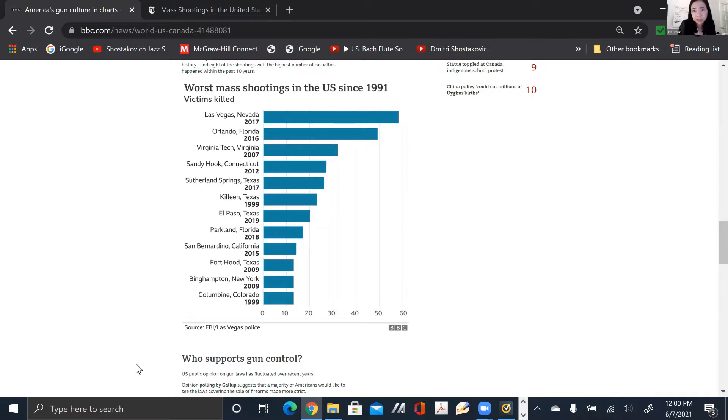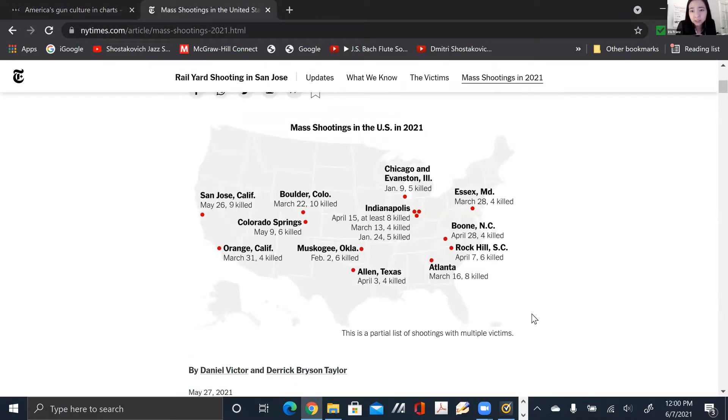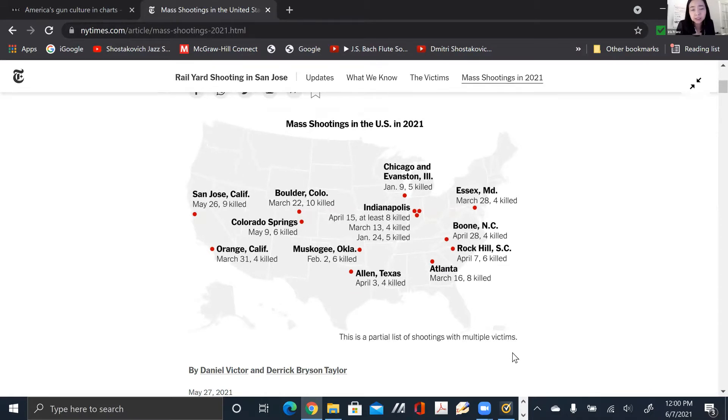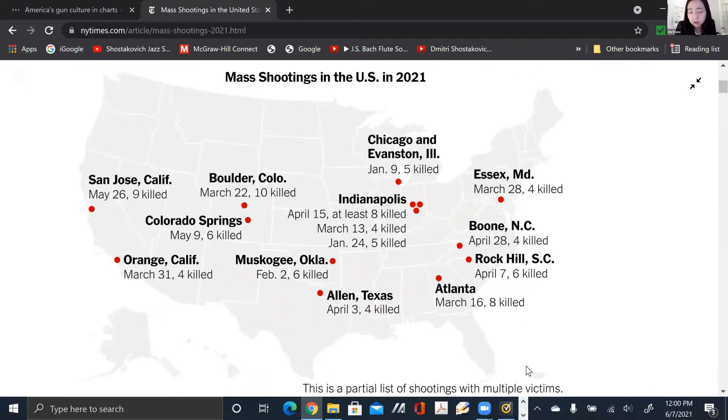And for more recent data, year 2021, I get this data from the New York Times. You can see that there are already many mass shootings occurring in the U.S., even though we're not at the end of the year yet. So these are just several examples of mass shootings and the negative externality from AR-15 or firearms in general.